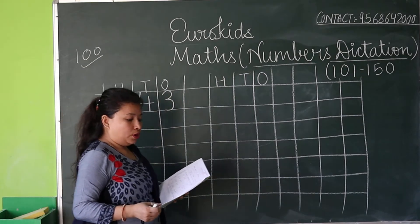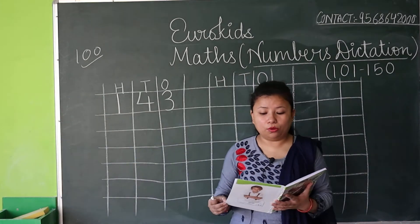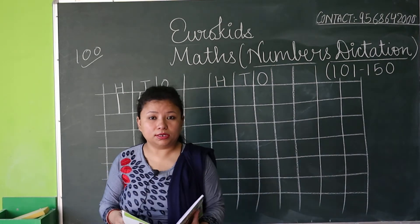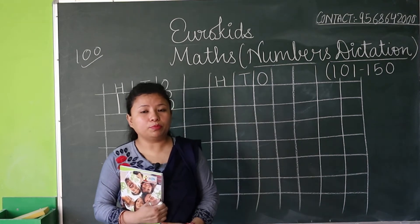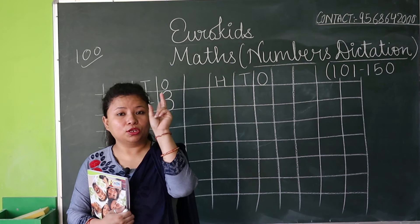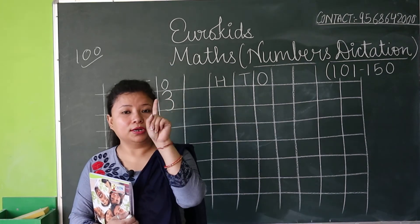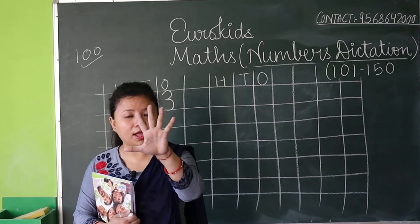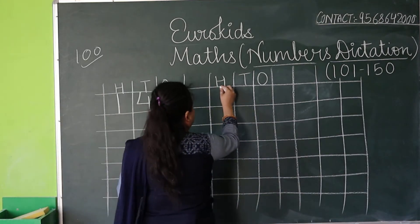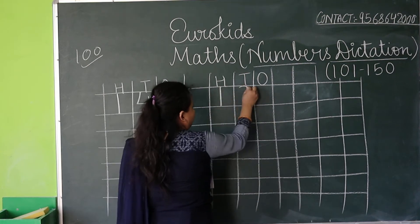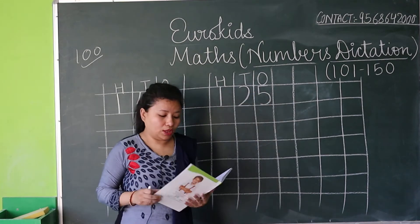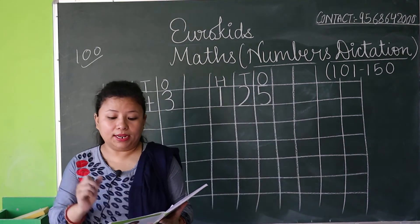I am sure you have written it. Now my next number is 125. 125 — from hundred you know it means one, 20 means two, and five — 125. Okay, now ma'am is writing 125.